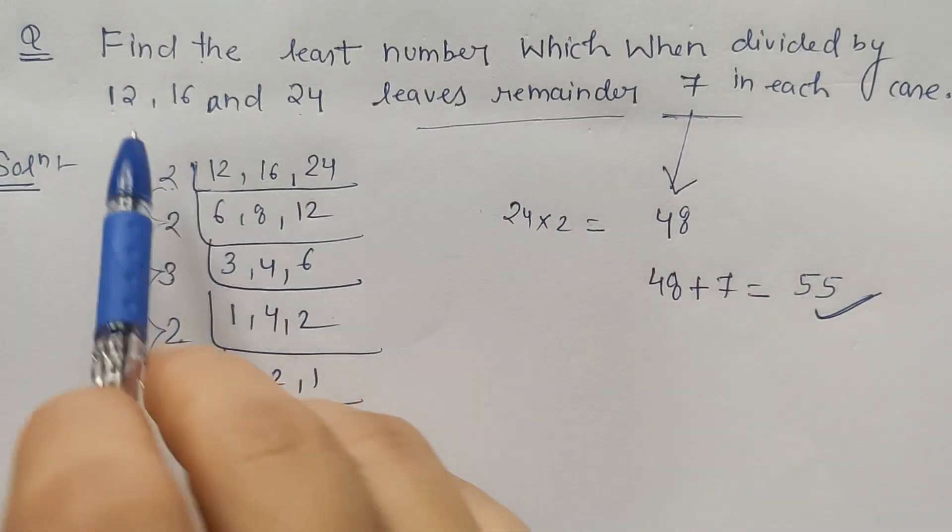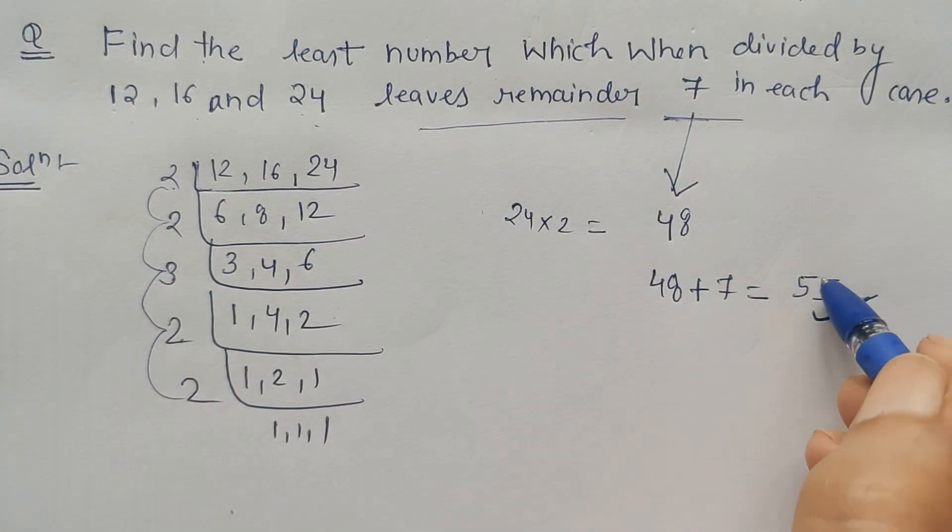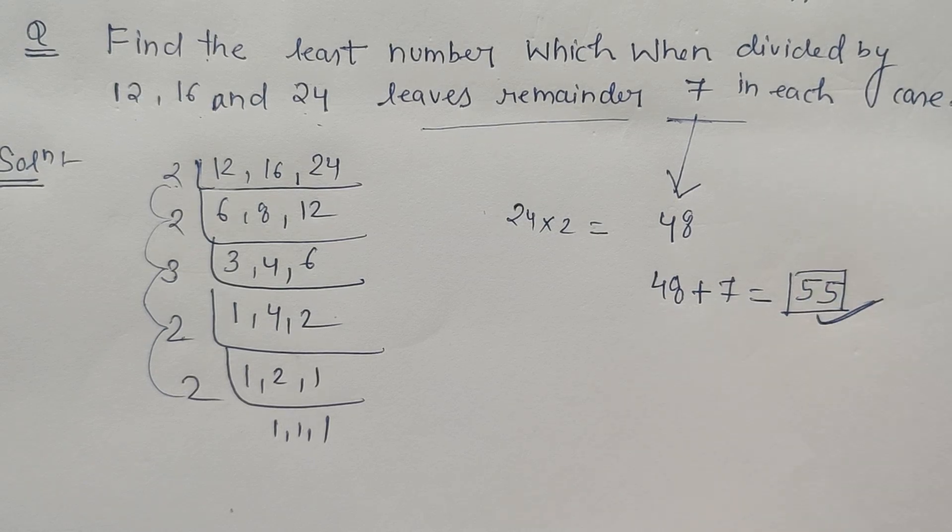This is the number which when divided by these numbers leaves remainder 7. This is how we calculate the least number problem. Thank you.